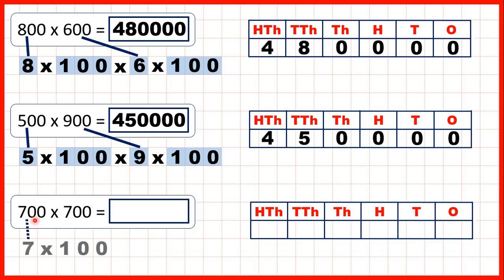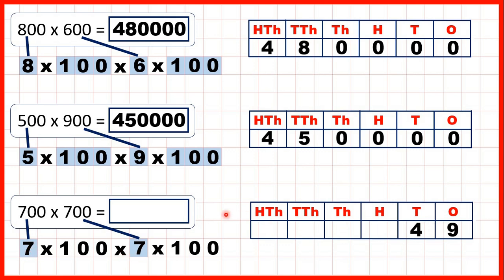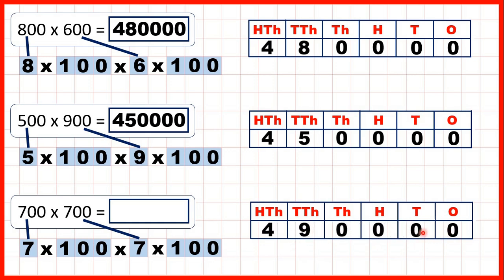Now 700 is 7 times 100, and we're multiplying by 700, so by 7 times 100 again. 7 times 7 is 49. Multiplying by 100 means we put two zeros on the end of our number, and then multiplying by 100 again means we need another two zeros — that's why our answer is 7 times 7 with four zeros on the end: 490,000.